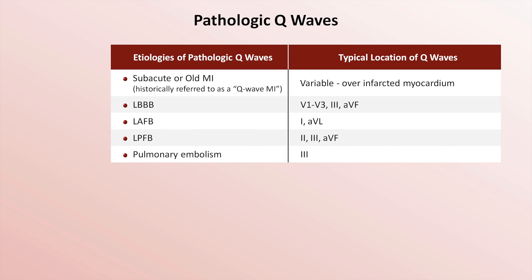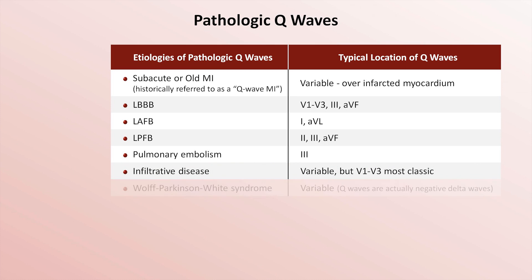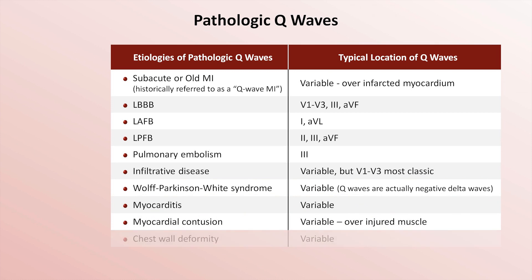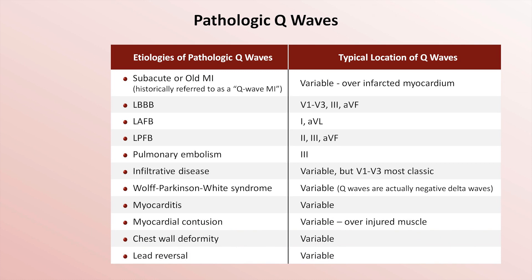Following an acute PE, an isolated Q-wave is occasionally seen in lead 3, which is a component of the S1, Q3, T3 pattern. The remainder of the etiologies are progressively more esoteric and include infiltrative diseases such as amyloidosis, Wolf-Parkinson-White syndrome, myocarditis, myocardial contusion, chest wall deformities, and as shown a moment ago, lead reversal.